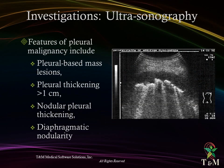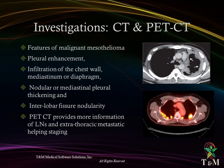Ultrasonography features of pleural malignancy include pleural mass lesions, pleural thickening more than 1 cm, and nodular thickening in the pleura and diaphragm. CT and PET scan features of malignant mesothelioma include pleural enhancement, infiltration of the chest wall, mediastinum, and/or diaphragm, nodular or mediastinal pleural thickening, and interlobar fissure nodularity. PET can provide more information on lymph nodes and extra-thoracic metastatic lesions, helping with staging.